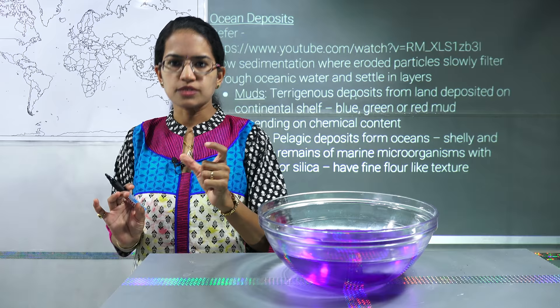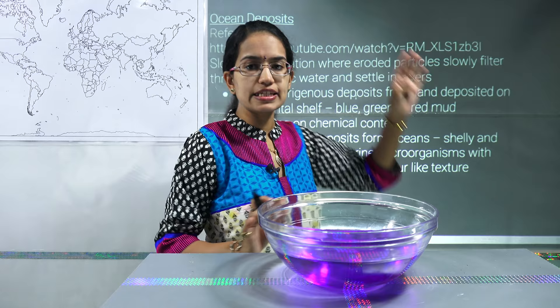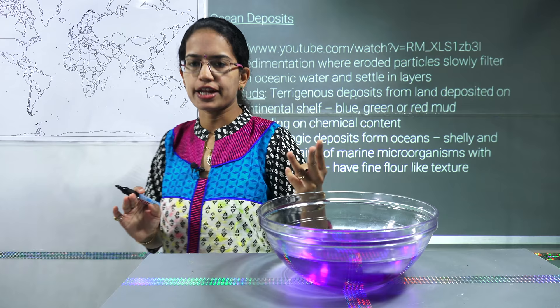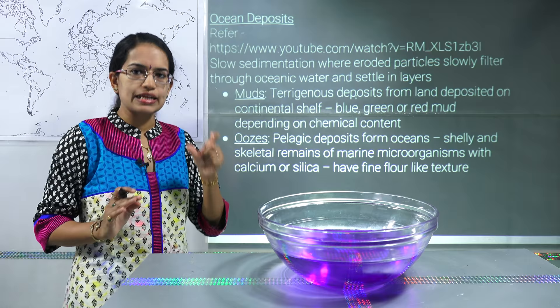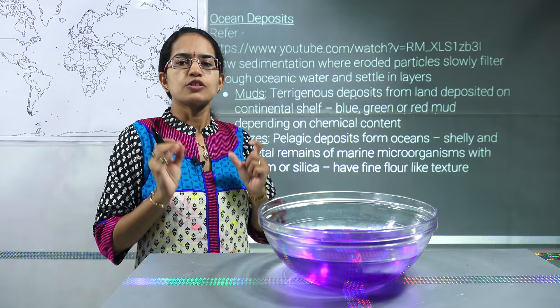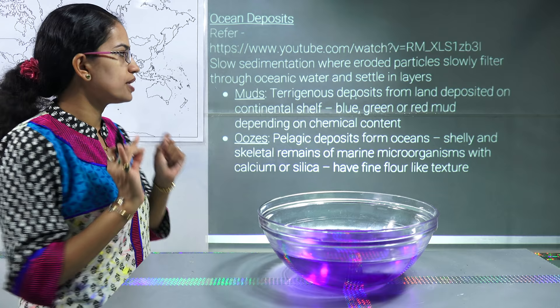The next is mud. Mud is found as a result of pterogenous deposits coming from the land. It could be blue, green, or red, and the color depends on the chemical constituents of the material in that region. So mud is a result of pterogenous deposits coming from the land.